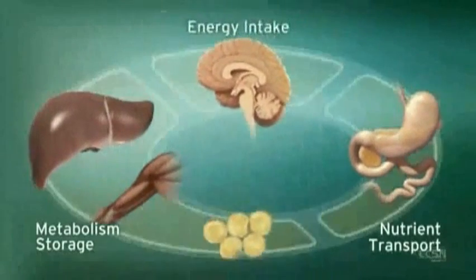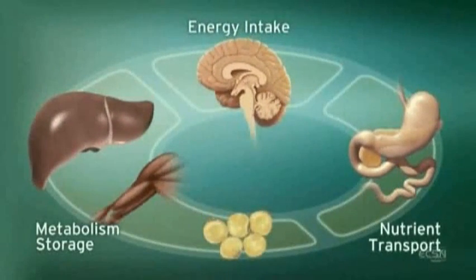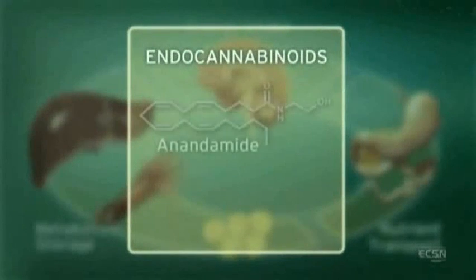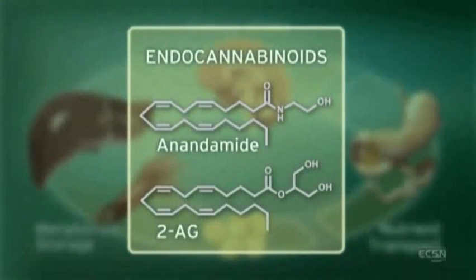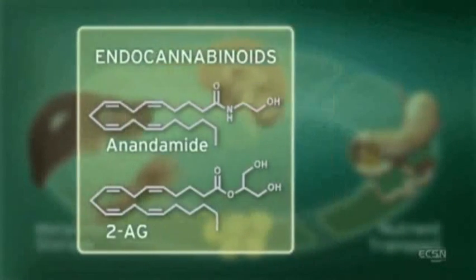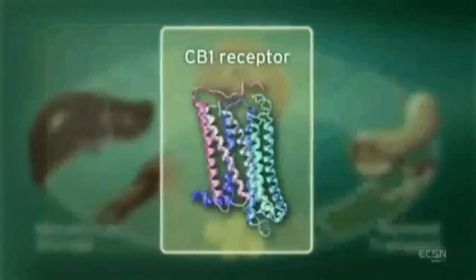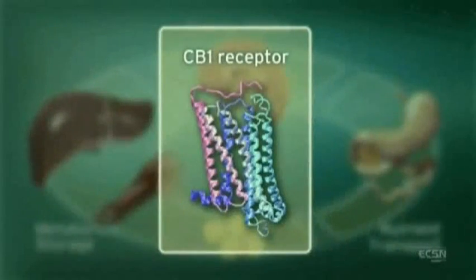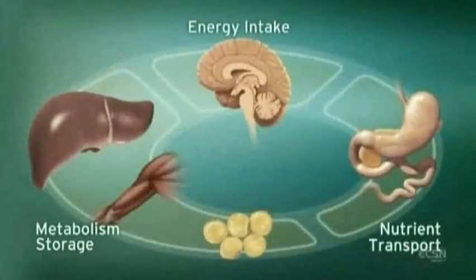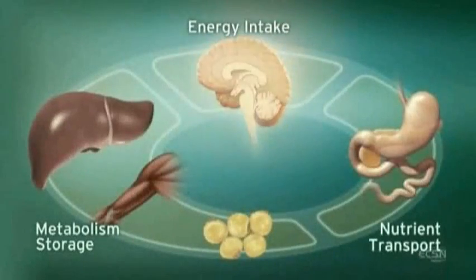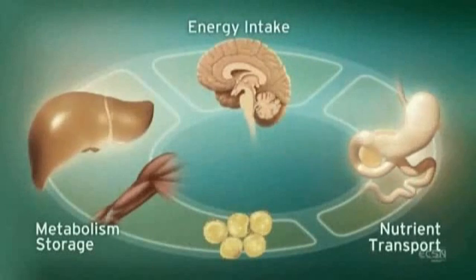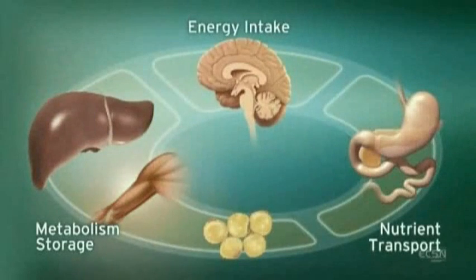The ECS regulates these processes through endogenous ligands, such as anandamide and 2-arachidonylglycerol, and the CB1 receptor. CB1 receptors are located in the brain, digestive tract, muscle and adipose tissue.